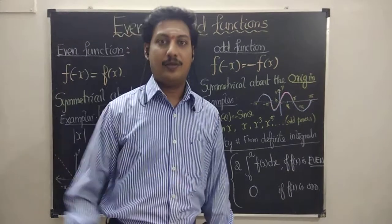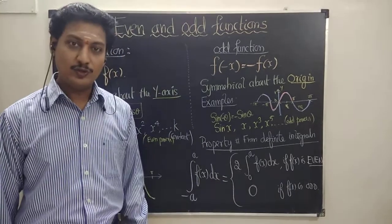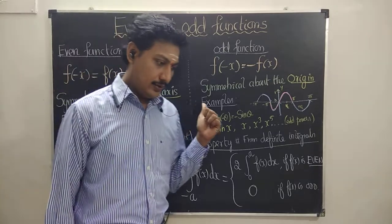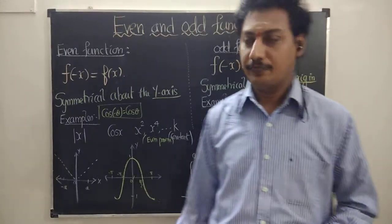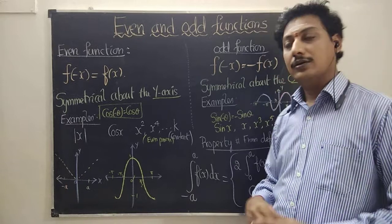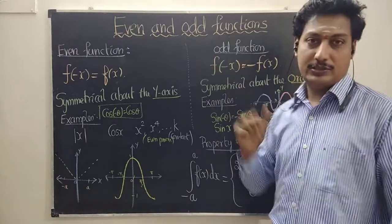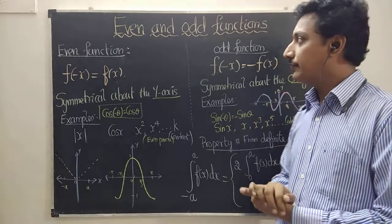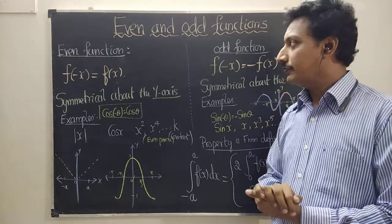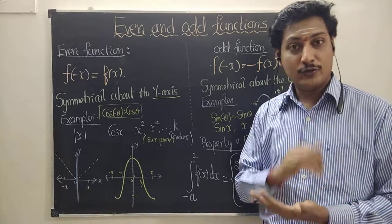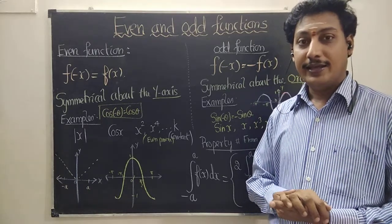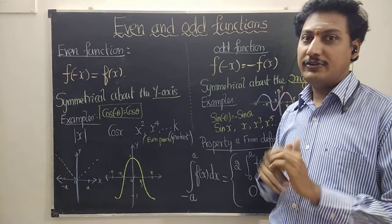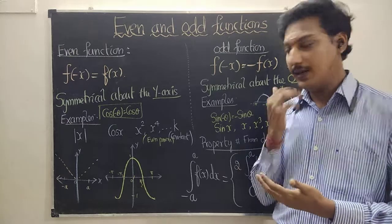Hello my dear friends, welcome to our YouTube channel ADCMAX. In this class I'm going to introduce even and odd functions, because even and odd functions play an important role in finding the Fourier coefficients a₀, aₙ, bₙ in the interval minus a to a — generally minus a comma a, or particularly minus l comma l, or minus pi comma pi.